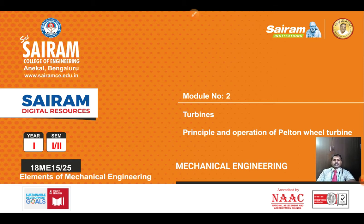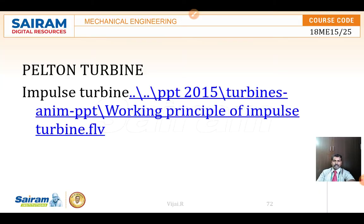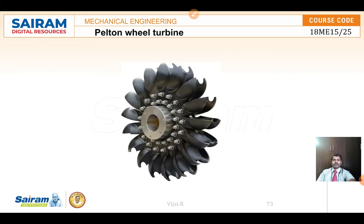The Pelton Wheel Turbine, based on the classification we discussed, is an impulse turbine. It operates on the impulse principle. Now we are going to see how the Pelton Wheel Turbine is constructed and how it operates.